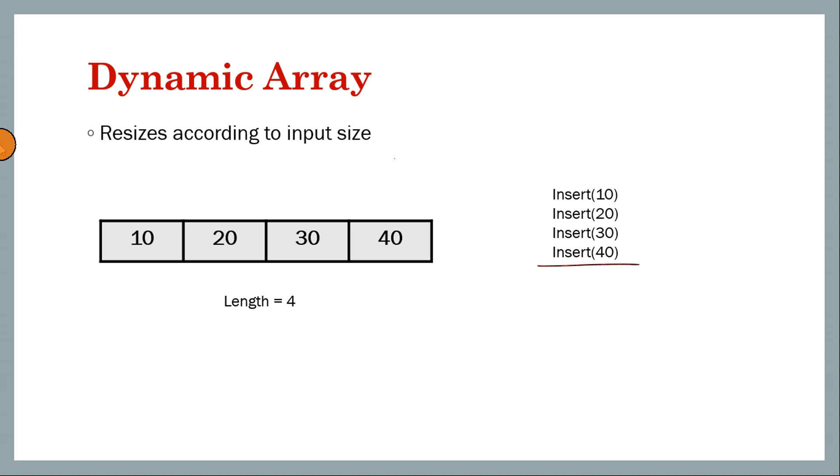Now if user inserts fifth element, can we insert here? We had seen that arrays store elements contiguously in memory, that is if this is at address 100 and the integer size is four bytes, then this will be at address 104, this will be at address 108.